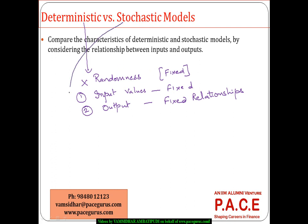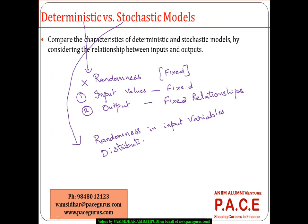Whereas, when we bring in the stochastic model, we look at the randomness in the input variables. Randomness in the input variables is one of the key characteristics of stochastic models, and they are assumed to follow some kind of a distribution. We feel that the variables are going to follow some kind of a distribution, so whatever the inputs are, we may get a series of outputs, not just one single output.